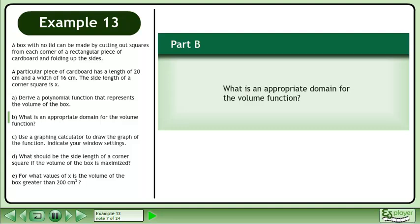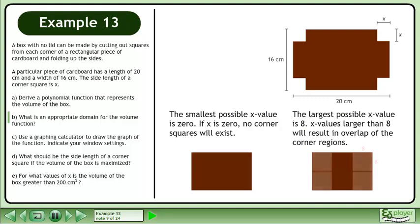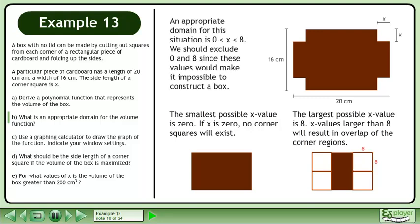Now we'll move on to Part B. What is an appropriate domain for the volume function? The smallest possible x value is 0. If x is 0, no corner squares will exist. The largest possible x value is 8. x values larger than 8 will result in overlap of the corner regions. An appropriate domain for this situation is 0 < x < 8. We should exclude 0 and 8 since these values would make it impossible to construct a box.